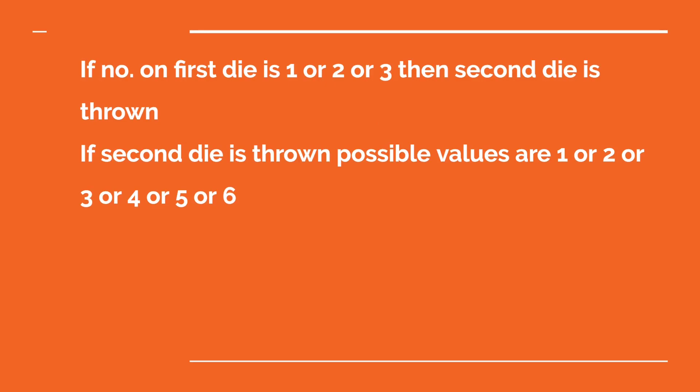Now, if number on first die is 1, 2, or 3, then second die is thrown. This is what we know from the statement. If second die is thrown, the possible values are 1, 2, 3, 4, 5, or 6. This is clear.